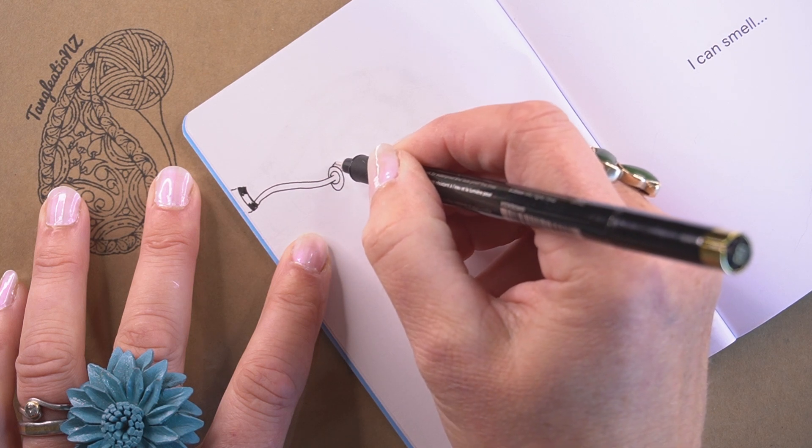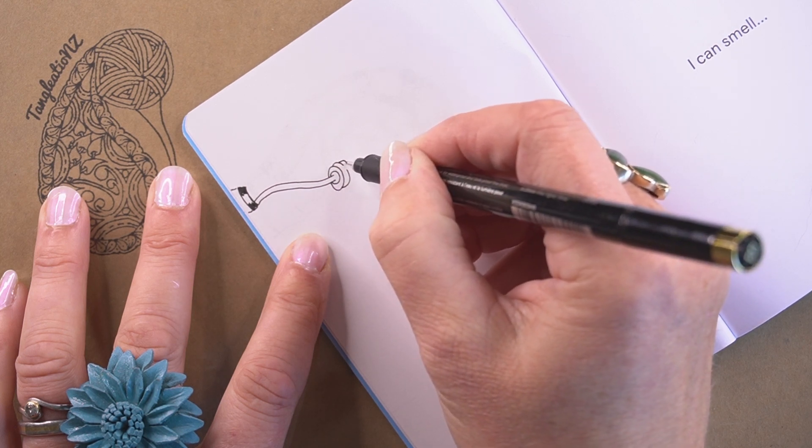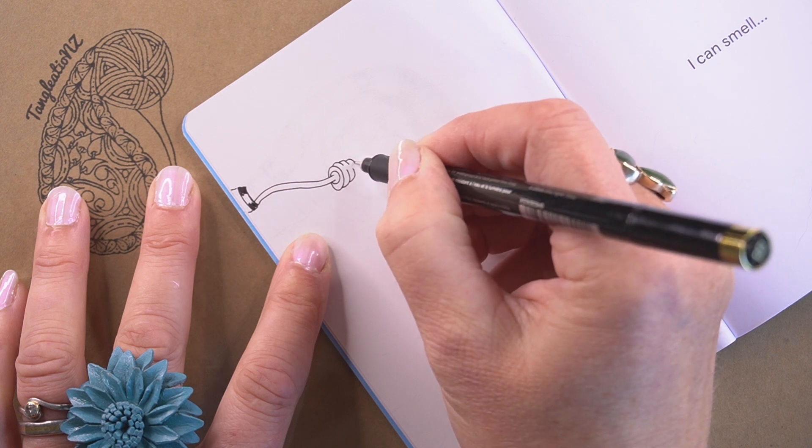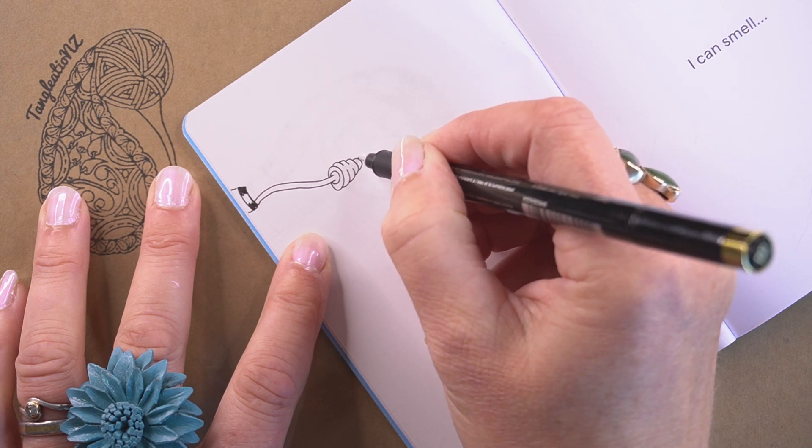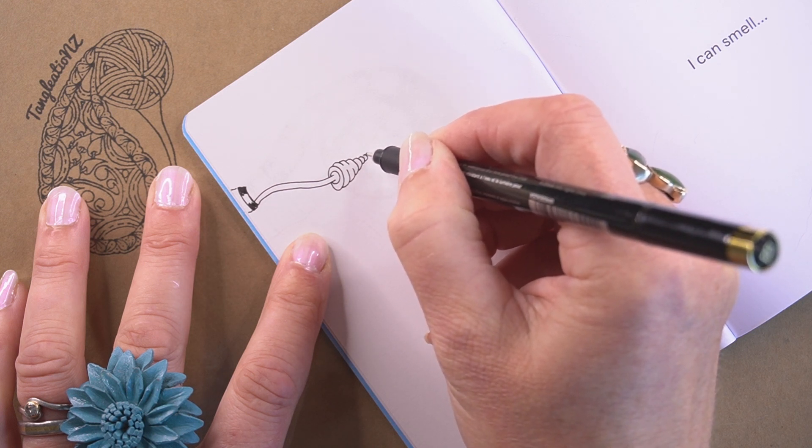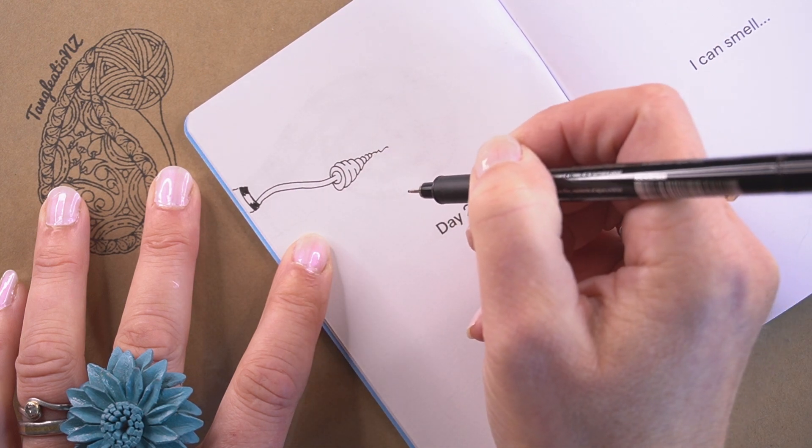After that, we're just going to draw these curved lines, these C shapes, just piggybacking off each other one at a time, getting smaller and smaller. You can finish with a flourish if you like.